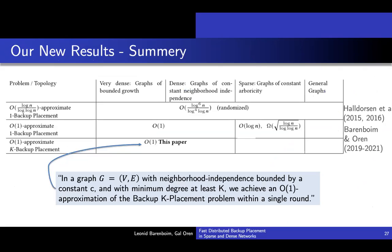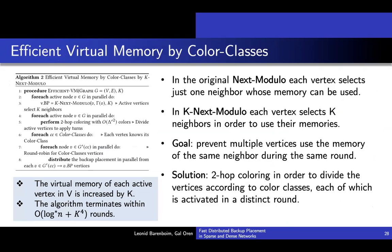From here, it is very simple to conclude that we achieve an O(1) approximation of the backup K-placement problem within a single round. However, we want to prevent a situation where multiple vertices use the memory of the same neighbor during the same round. In such a case, for a graph with bounded neighborhood independence C, instead of gaining an increase by a factor of K, we may gain only a slow factor of K divided by C, which is not desirable.